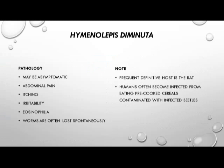Infection with Hymenolepis diminuta can be asymptomatic with light infection, or heavier infection can cause abdominal pain, itching, irritability, eosinophilia, and Löffler syndrome, and worms are often lost spontaneously. The frequent definitive host of diminuta is the rat, while humans often become infected from eating pre-cooked cereals contaminated with infected grain beetles.